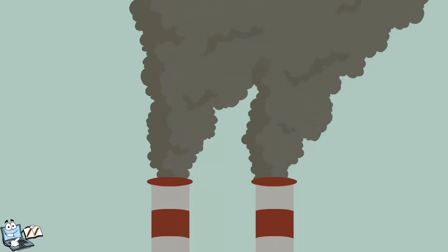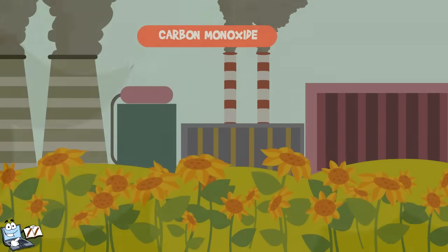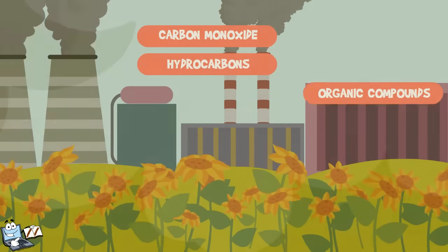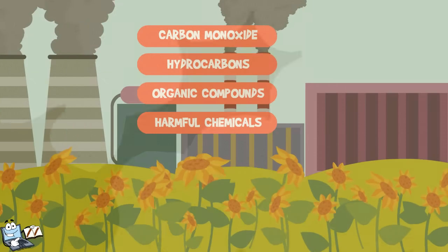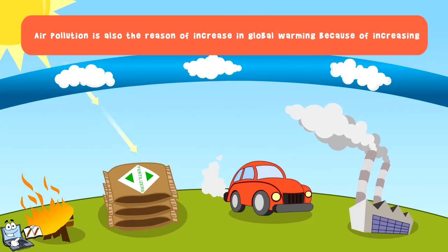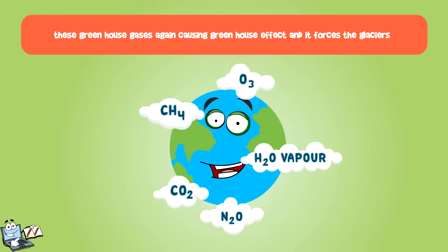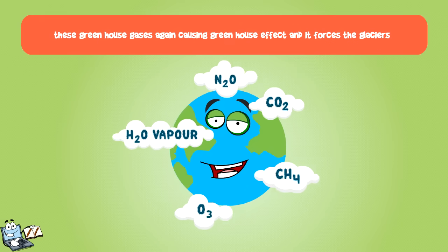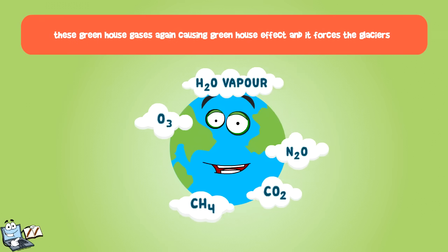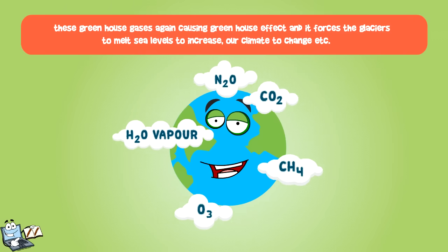A large number of industries are also causing the release of industrial smoke and dangerous gases, like carbon monoxide, hydrocarbons, organic compounds, harmful chemicals, and more from mills and factories to the environment. Air pollution is also the reason for increases in global warming because of increasing atmospheric temperature due to the vast increasing level of greenhouse gases. These greenhouse gases again cause the greenhouse effect, forcing glaciers to melt, sea levels to increase, and our climate to change.